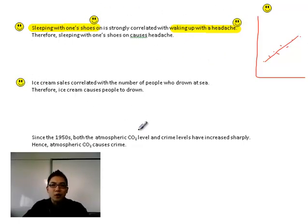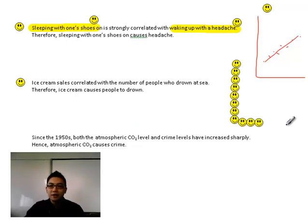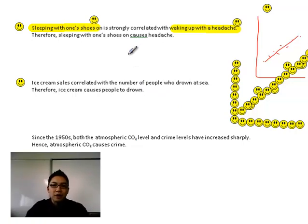Next one: ice cream sales are correlated with the number of people who drown at sea. Does that mean the more people who drown at sea, ice cream sales are going to go up? If you were to draw a line and connect these dots, maybe there would be a strong correlation, but it doesn't necessarily mean that one is causing the other. Try to come up with an example now.